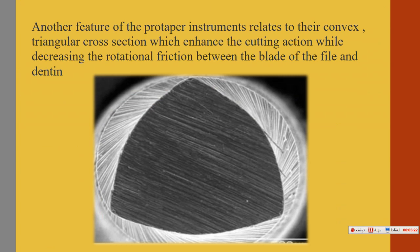Another feature is the triangular cross-section. The rounded triangular cross-section decreases rotational friction between the blade and the dentine, reducing stress on the dentine and preventing instrument fracture and dentine weakening. The instrument contacts the dentine wall at only three points due to this triangular cross-section.